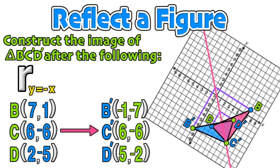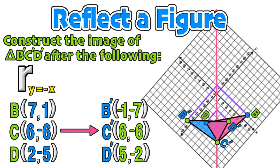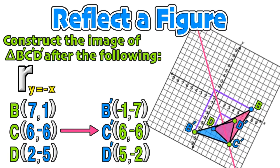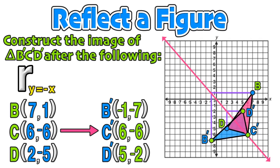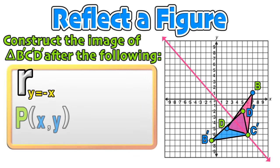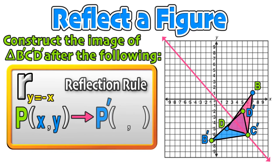We can rotate the graph to better visualize what this reflection looks like. Comparing coordinates: B at (7, 1) and B' at (negative 1, negative 7); C remains unchanged; D at (2, negative 5) and D' at (5, negative 2). For this relationship, when reflecting any point over the line y equals negative x, the x and y values are switched and negated — so (x, y) becomes (negative y, negative x).